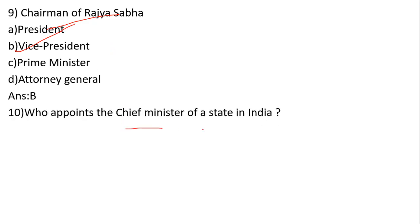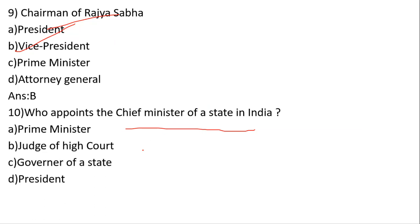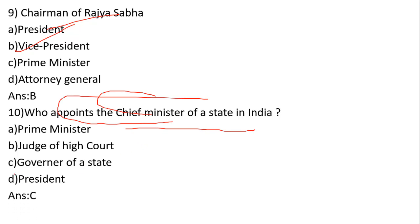Who appoints the Chief Minister of a state in India? Options: President, Prime Minister, Judge of High Court, Governor of State. The correct answer is the Governor of the State. Who appoints the Prime Minister? That is also determined similarly.